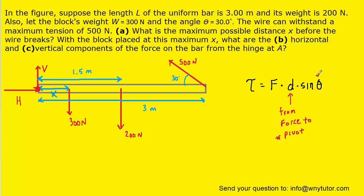Theta will be the angle between the force and the bar. For example with the 500 Newton tension force we can see clearly the angle is 30 degrees. With the downward acting forces the angle would be 90 degrees because they act perpendicular to the rod. Also we need to note that when a force produces a clockwise torque it is considered to be negative and when a force produces a counterclockwise torque it is considered to be positive.